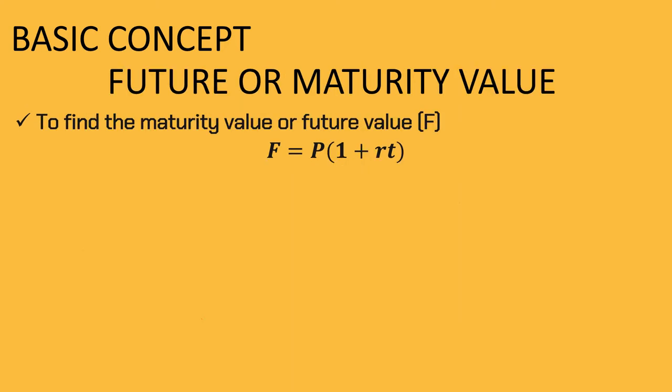For the future or maturity value, we have F is equal to the principal amount P times the sum of 1 and rate times time. F stands for the maturity value of the loan or investment.